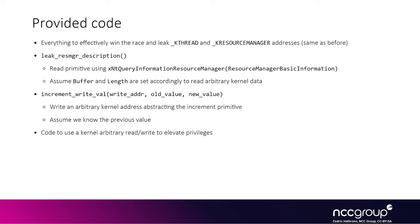In order to build this arbitrary read primitive, we're going to rely on a function called `leak_resource_manager_description`. This is not our actual arbitrary read primitive function, but it's going to be a helper to implement it. This function abstracts calling the NT Query Information Resource Manager function to request the k-resource-manager's description field. It assumes the buffer and length fields of the description field are already set, and it will return arbitrary kernel data pointed to by the buffer field back to userland.